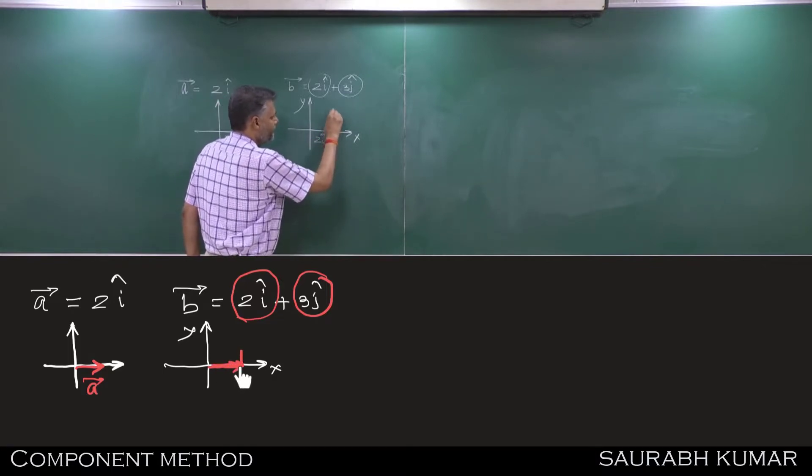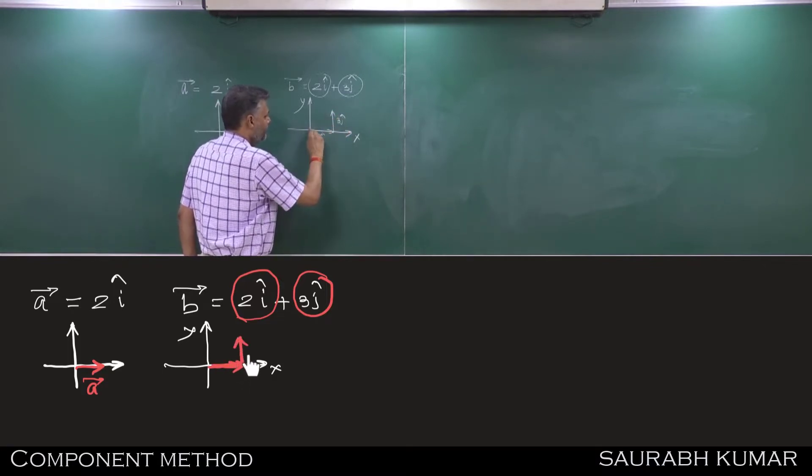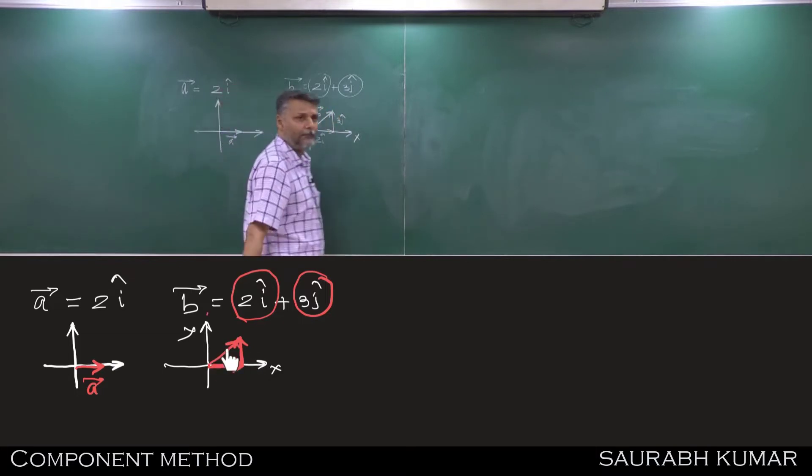Plus 3j cap. So this is vector B. This is your vector B.